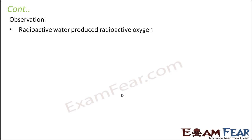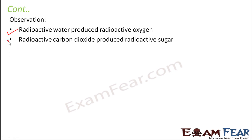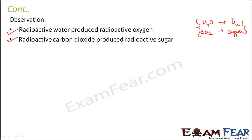The observation was that radioactive water produced radioactive oxygen. Also, radioactive carbon dioxide produced radioactive sugar. When the oxygen of carbon dioxide was made radioactive, the oxygen produced was not radioactive, but the sugar was radioactive. So it was concluded that in the reaction, water gives oxygen and carbon dioxide gives sugar. Basically, the oxygen comes from water and the sugar comes from carbon dioxide.